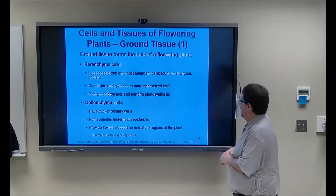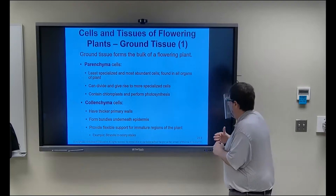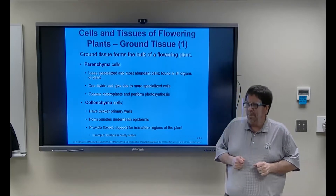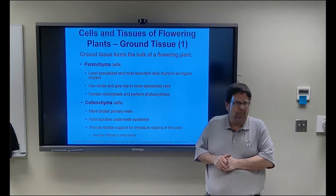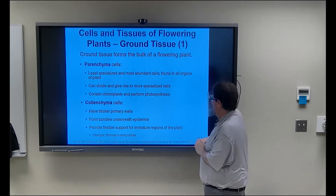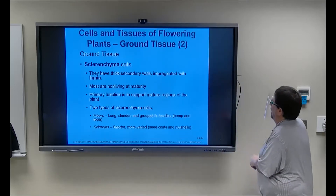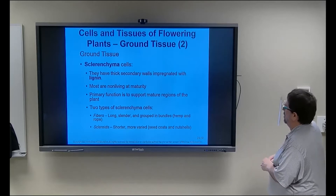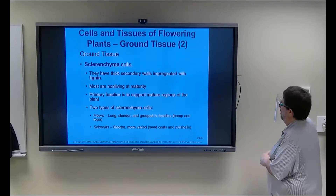Collenchyma has a thicker primary wall and forms bundles underneath the epidermis, providing flexible support like a skeleton for plants. This is the stringy thick stuff in celery stalks — when you pop celery, that stringy stuff is collenchyma. It's the structural cell that helps form a skeleton of sorts for plants.